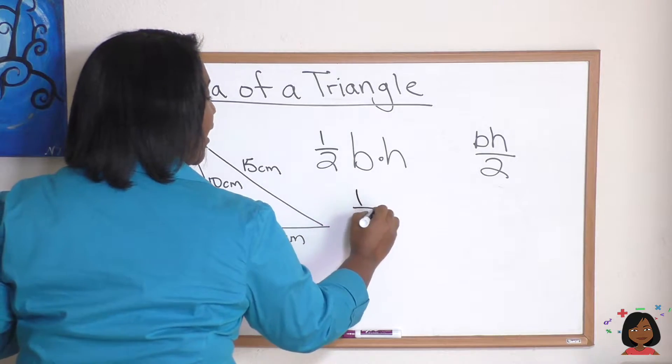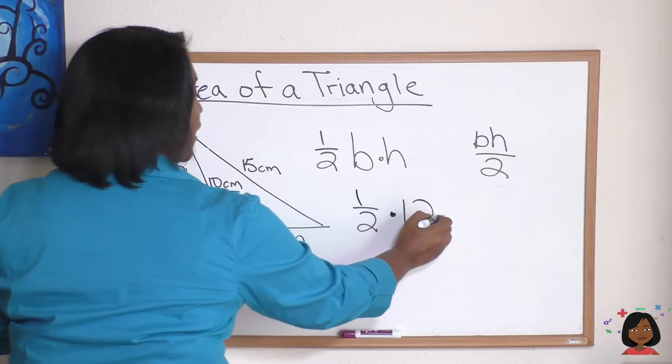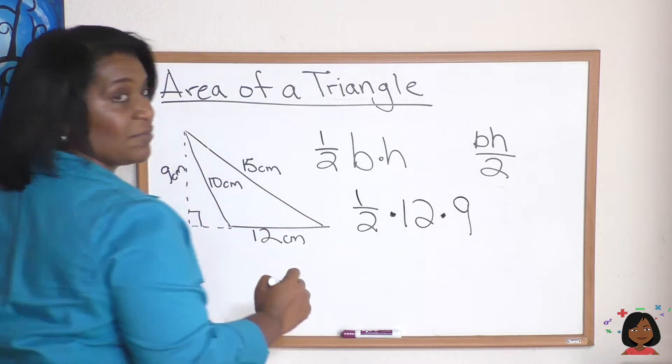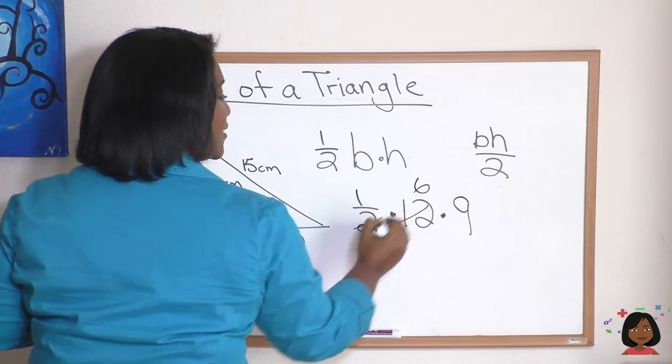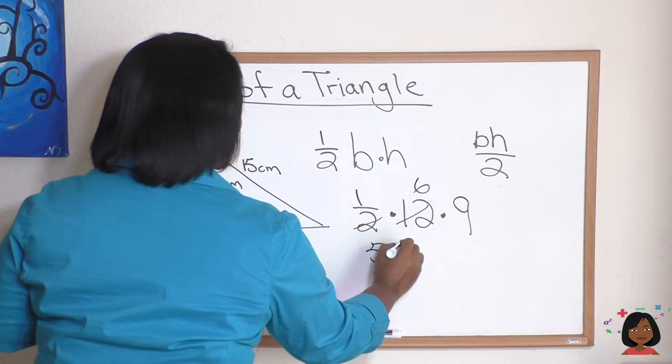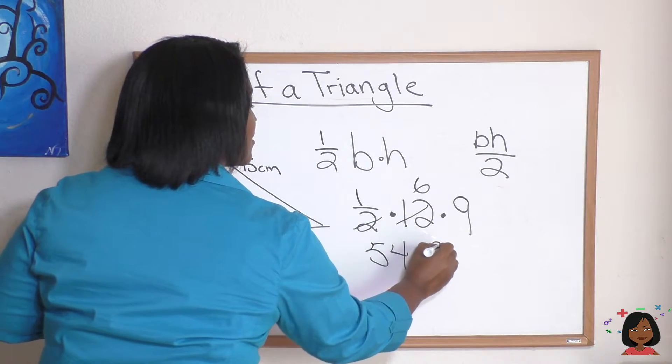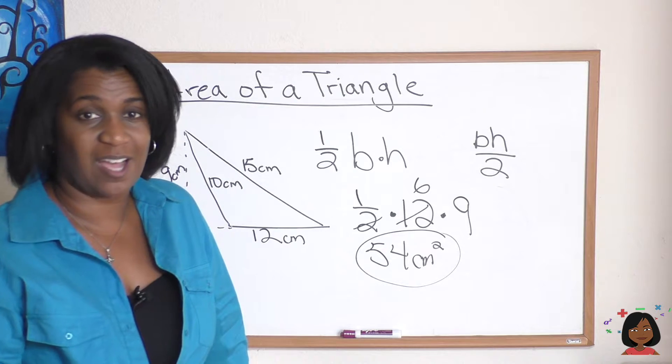All right, now let's go ahead and do the math: one half times twelve times nine. Let's simplify ahead of time. Two into twelve is six. Nine times six is 54, and where's my label? Centimeters squared.